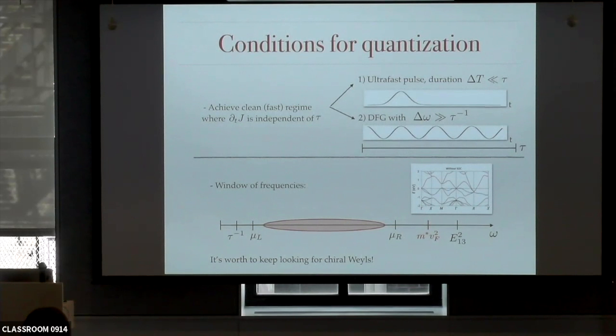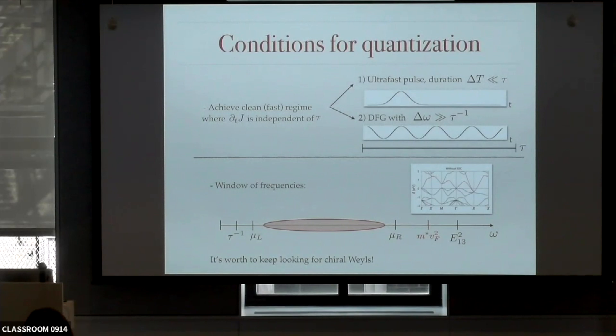There are a number of things that need to work properly so that this really happens. In particular, because this is an extra drawback of multifolds, I would say it's still worth keeping looking for standard chiral Weyl semimetals that don't have this problem — where the only issue is really the chemical potentials and that there are no other bands around. Something like strontium disilicide or something. I think it's still worth looking for.